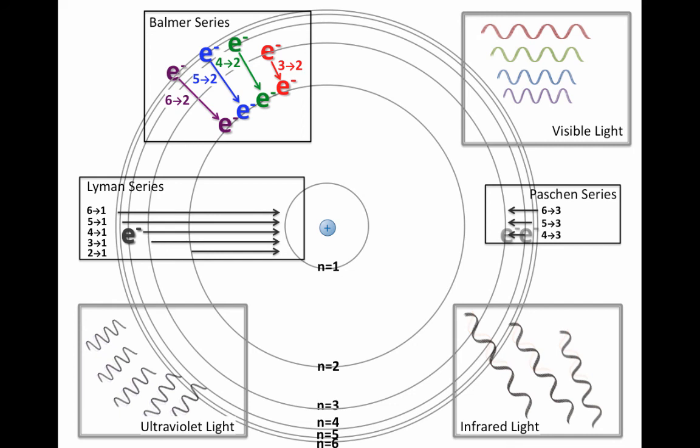So in summary, an emission spectrum is all the different types of radiation given off when electrons in an atom transition in between the possible positions. For hydrogen, this emission spectrum is fairly simple since it only has one electron and the positions of that electron are fairly well described.